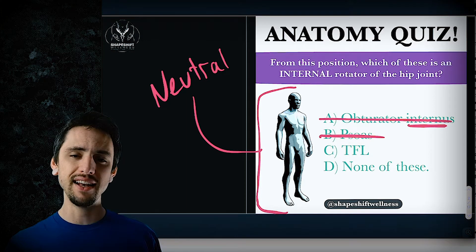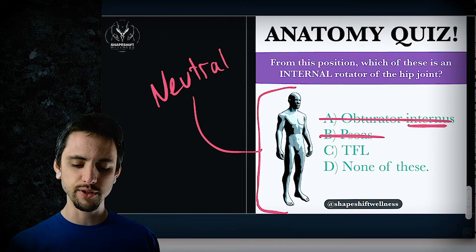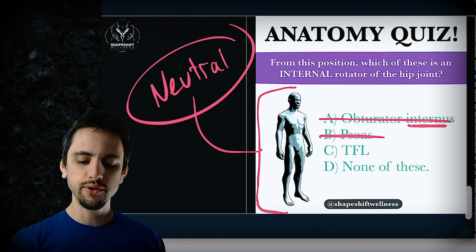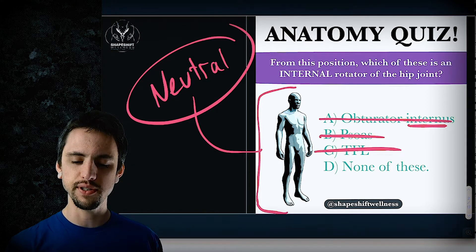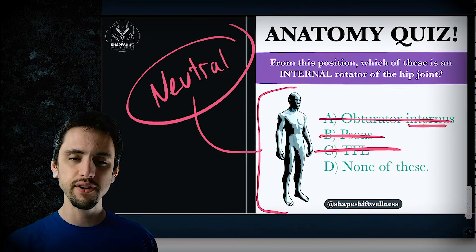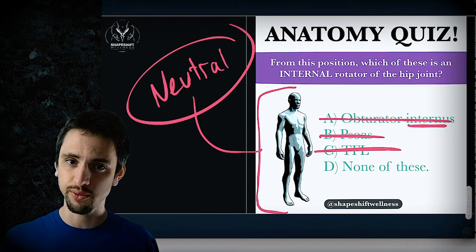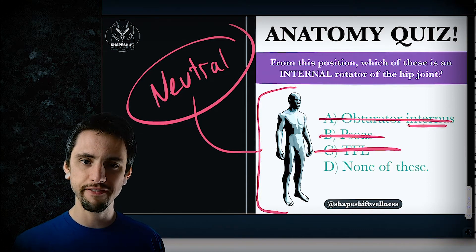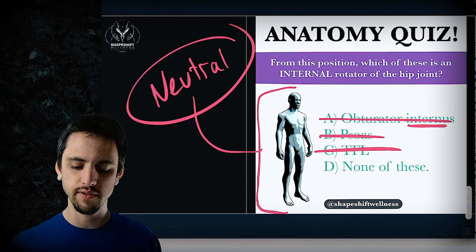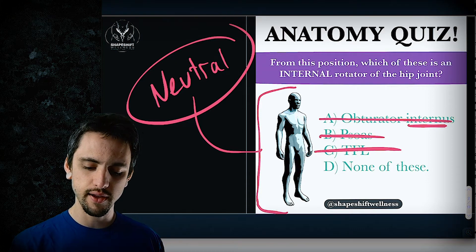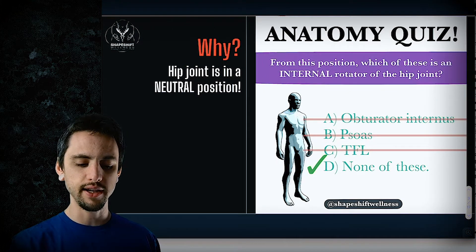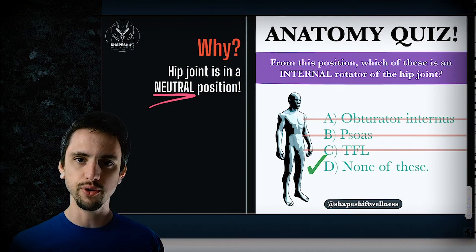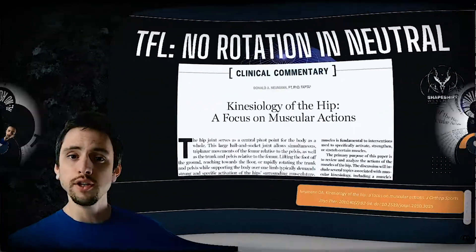A lot of people know that the TFL can internally rotate the hip, and that's why I put it there. However, in the neutral position — and this might be news to some of you — the TFL does not internally rotate the hip from this position. You must be in a flexed position of the hip. So the answer is none of these, because we're in the neutral position.